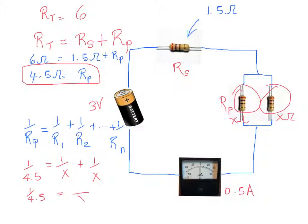So that's two over X. So we have here that one over 4.5 equals two over X. We can go ahead and cross multiply and we get that X is equal to nine ohms.